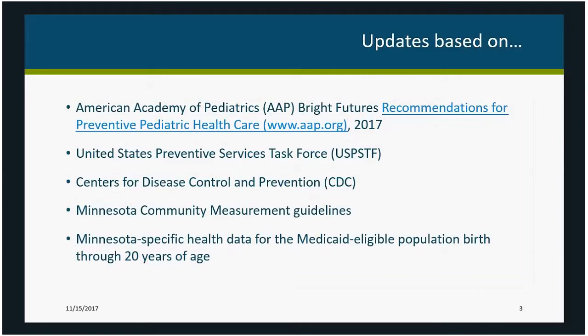If the USPSTF has a grade A or B recommendation for a screening service, it's more likely to be reflected in the Child and Teen Checkups periodicity schedule. We also pay attention to other national recommendations and guidelines, especially from the Centers for Disease Control and Prevention or the CDC, for example as it relates to immunizations, tuberculosis, and early childhood development. Child and Teen Checkups guidelines also align with Minnesota Community Measurement guidelines and the required clinical reporting that clinics do across the state for pediatric preventive care. A caveat and slight difference between Child and Teen Checkups and that measure will be mentioned later under mental health screening.